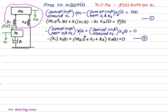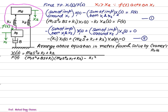The first term in the second equation is the same: minus k1 multiplied by x1(s). When writing the equation for m2 about x2, we consider m2 and all elements nearby m2. Impedance of m2 is m2·s², plus k1, plus k2, multiplied by x2(s) equals zero. Arranging equations 1 and 2 in matrix form and solving by Cramer's rule, we get x1(s)/F(s) equal to m2·s² + k1 + k2 over the determinant, minus k1 squared.